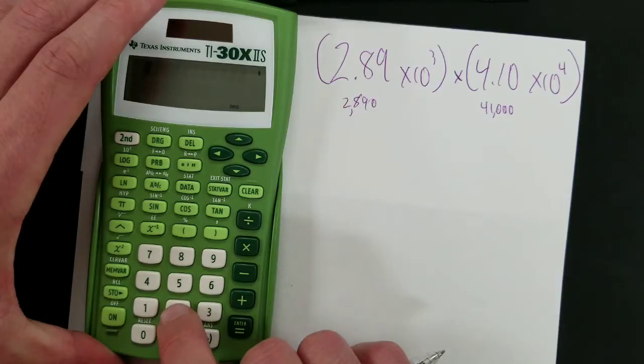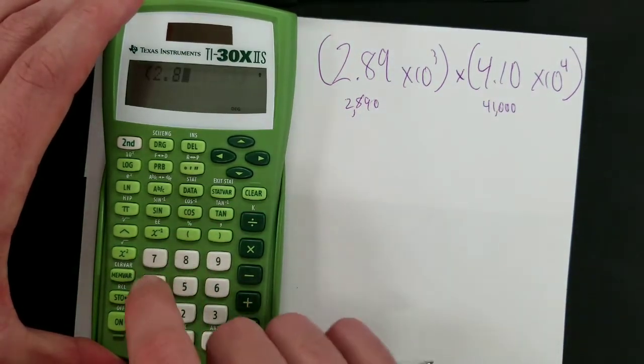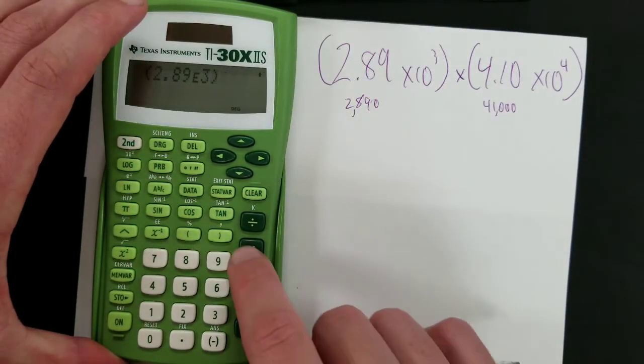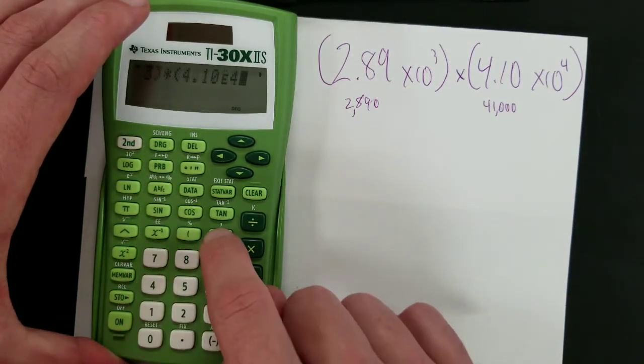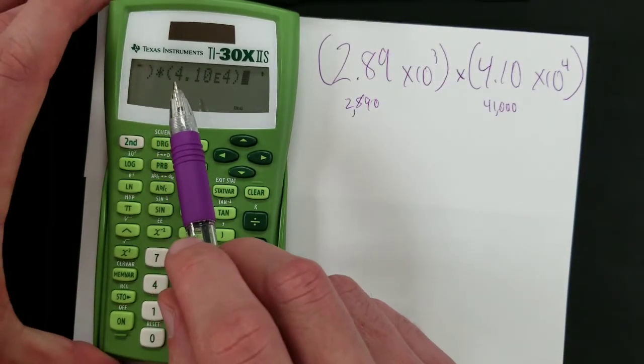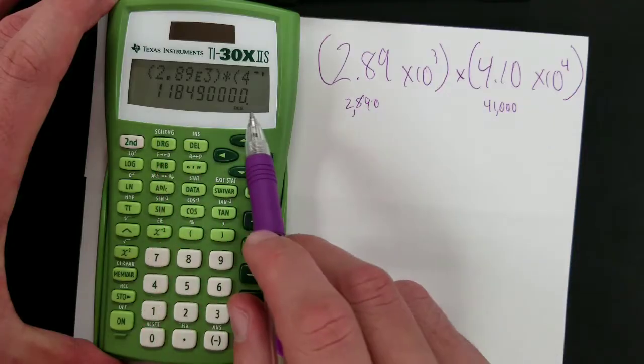So here's how you do it on a calculator. Open parentheses, 2.89 times 10 to the third power, close parentheses. Times 4.10 times 10 to the fourth. Again, close the parentheses that were opened earlier. Press enter, and you get that big long number.